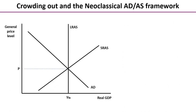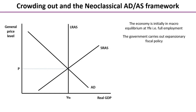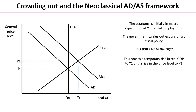Let's look at how we can illustrate this using aggregate demand and aggregate supply analysis. On screen is the standard neoclassical AD/AS framework. Initially, this economy is in macroeconomic equilibrium at Yfe — in other words, at full employment — and the general price level is P. The government carries out expansionary fiscal policy, causing AD to shift to the right. We get a temporary rise in real GDP to Y1 and the price level rises to P1. According to neoclassical economists, this creates a positive output gap, which is not sustainable, as the factors of production become increasingly scarce and overused.